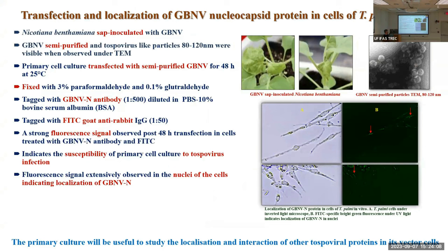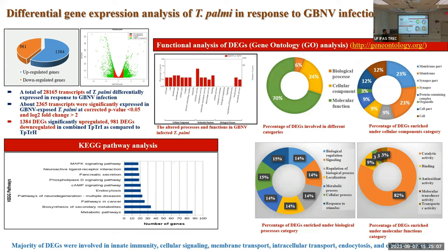The next stage was to obtain purified virus particles to transfect the cell culture. We sap-inoculated Nicotiana benthamiana with GBNV and purified the GBNV particles, which showed characteristics typical of the virus. These purified particles were introduced into the cell culture and localized using FITC-coated antibodies. We observed a strong fluorescence signal in the nuclei of the cells, indicating that the viruses were localizing and interacting with the nuclei.